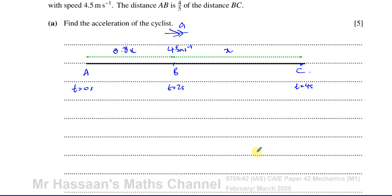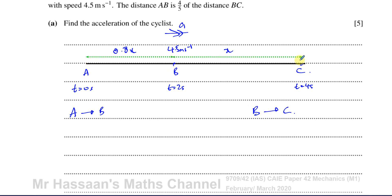We want to use the values we know — the times and the speed at point B — as much as possible. I'm going to set up one equation describing what happens between A and B, and another equation for what's happening between B and C. I'm not going to describe between A and C because I don't have speed information at A or C. At B I know the speed, so the final speed going from A to B is 4.5, and the initial speed going from B to C is also 4.5.